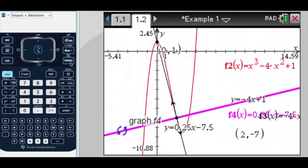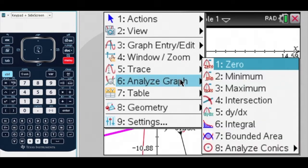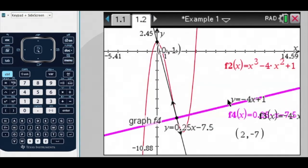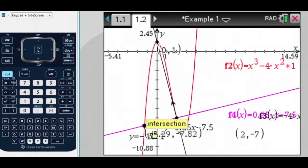Menu, Analyze Graph, Intersection, this purple graph, and this red graph. Ok, my lower bound, my upper bound, there is one point of intersection.